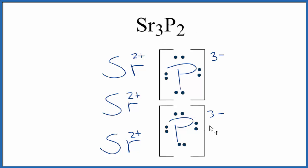Note that this is just a formula unit. Strontium phosphide is a crystal, which is a repeating pattern of formula units. Still, this shows us how the electrons have been transferred from the strontium to the phosphorus for the Lewis structure in Sr₃P₂, strontium phosphide.